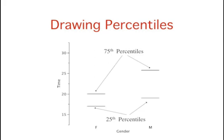Then we draw lines representing the 25th and 75th percentiles for each gender. Thus, for each gender, the lower line is the 25th percentile, and the upper line is the 75th percentile. For the women, the 25th percentile is 17, and the 75th is 20. For the men, the 25th percentile is 19, and the 75th is 25.75. We can see already that it took men longer than women to name the colors since both percentiles are higher for the men than for the women.